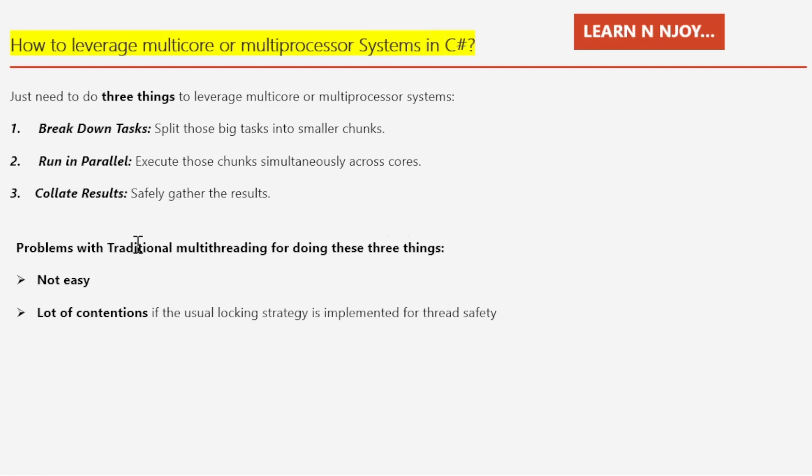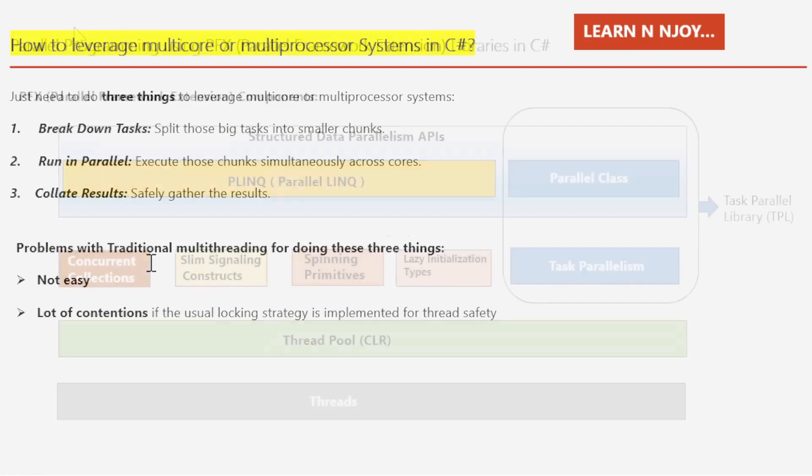Doing these three things is not easy if we go with traditional multi-threading. Also, the usual strategy of locking for thread safety causes a lot of contention when many threads work on the same data at once. Isn't traditional multi-threading a solution? While effective, it's not always straightforward. That's where the Parallel Framework Extension — the PFX libraries — come into play. It simplifies these steps, allowing us to focus on business functionality while PFX handles the heavy lifting.